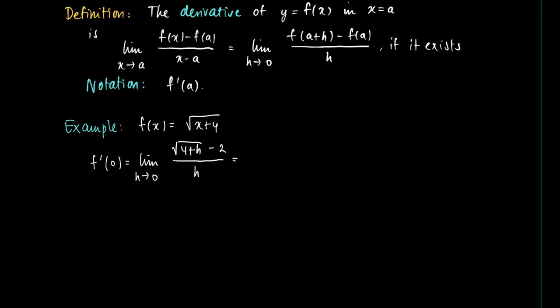Now we use the root trick. We see that this limit equals the limit for h to 0 of the square root of 4 plus h minus 2, multiplied by the square root of 4 plus h plus 2.